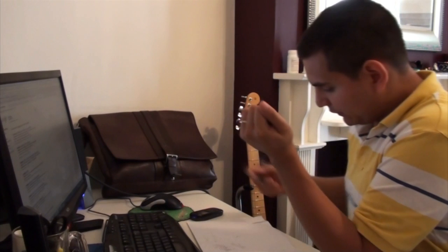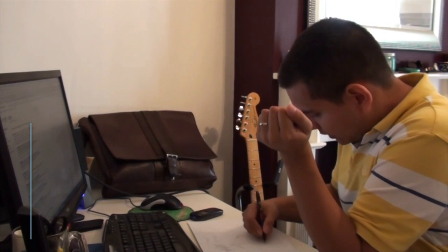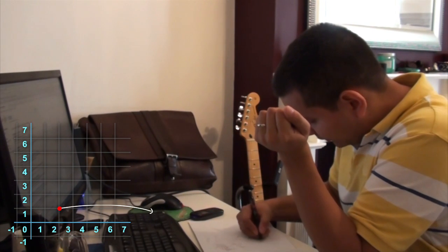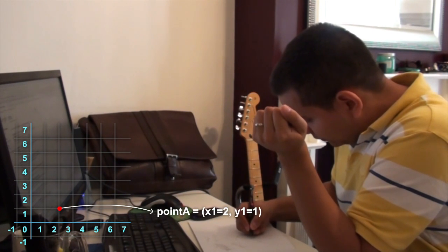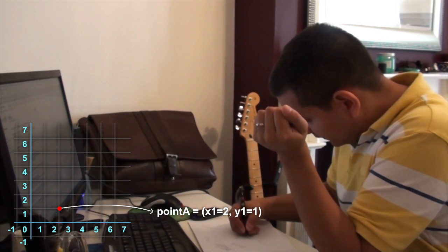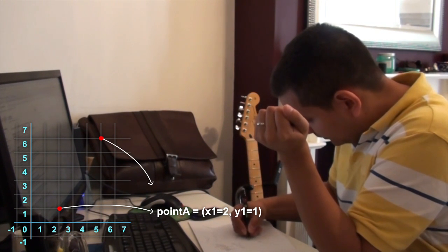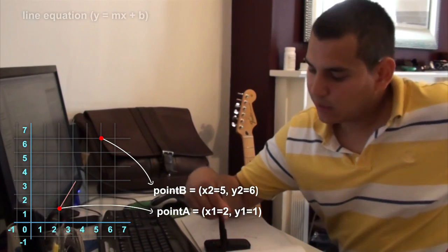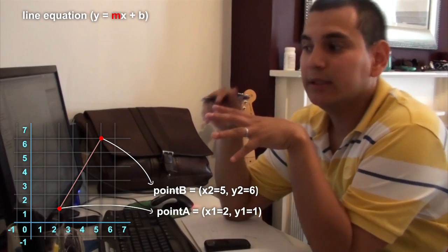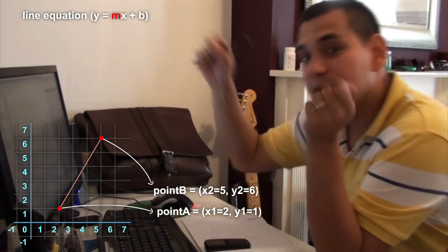Let's say we have this line here, from the point, let's say 2, 1, point A, to the point 5, 6, point B. The line equation represents an infinitive line, and it has something called the slope. That is the inclination, or the direction of it.